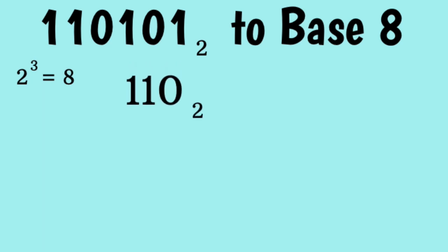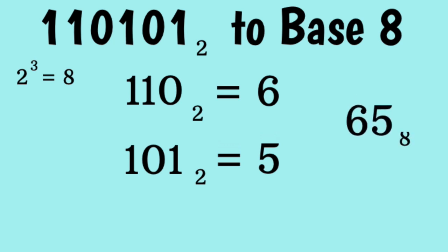We can split our number up into two groups. Our first group is 110. So, 110 base 2 is equal to 6. Our second group is 101 base 2. 101 base 2 is equal to 5. So now, what we must do is put our two digits together to get our final answer of 65 base 8.